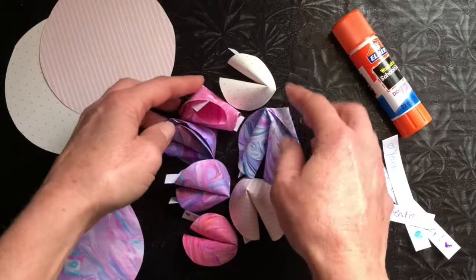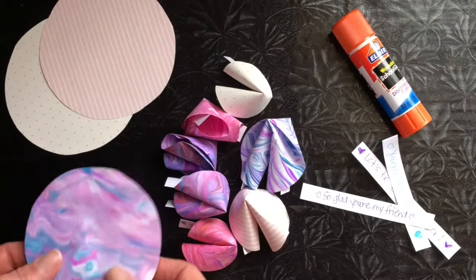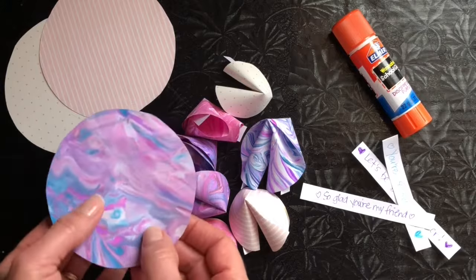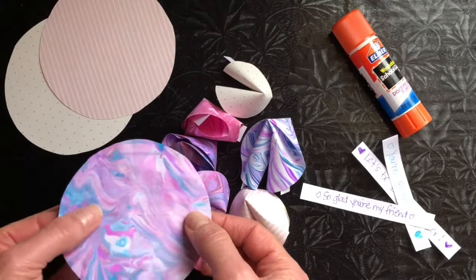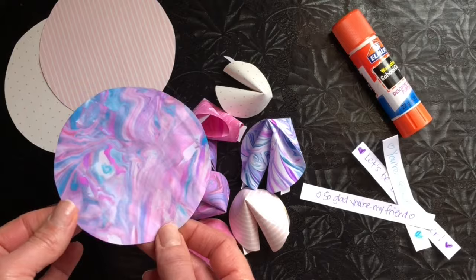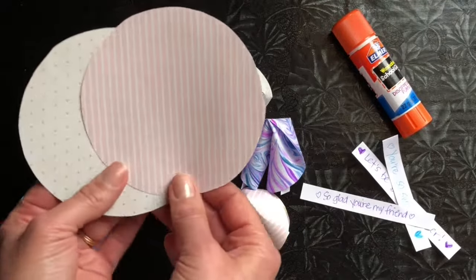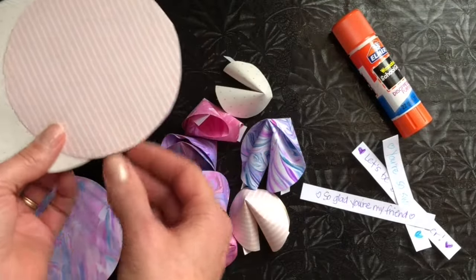So to make your fortune cookies you'll need paper. We're using some marbled paper that we made with shaving cream and liquid watercolors. You can find the tutorial for that on the blog at happyhooligans.ca and we're using some wallpaper samples.